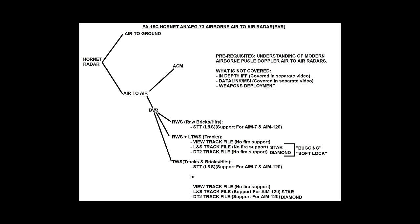So it essentially has three sub-modes: RWS — range while search; RWS with the addition of LTWS — range while search with latent track while scan; and TWS — track while scan. All three are search modes. From each of these three search modes we can come out with a final product — a track. From RWS we can only get one type of track: an STT, a single target track.